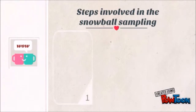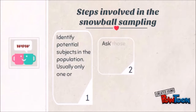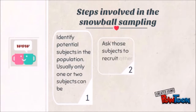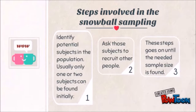Steps involved in Snowball Sampling: First step, identify the potential subjects in the population. Usually, only one or two subjects can be found initially. Second step, ask those subjects to recruit other people. This step continues until the needed sample size is found.